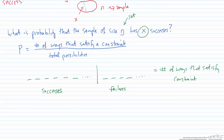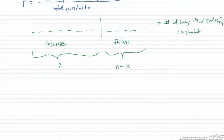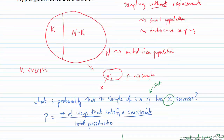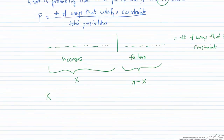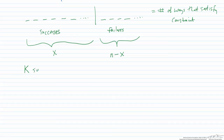We're saying the sample has x successes, so the number of failures is n minus x. We have K successes in our population. So how many ways can we choose x successes from K possibilities? It's just K choose x. For example, if we had 20 successes in a population of 100 and our sample will have 3 successes, that would be 20 choose 3.